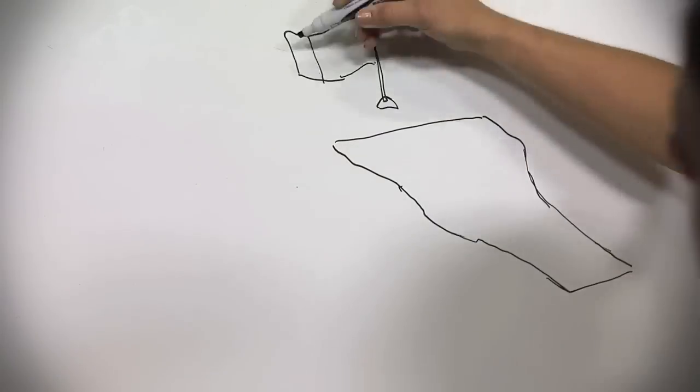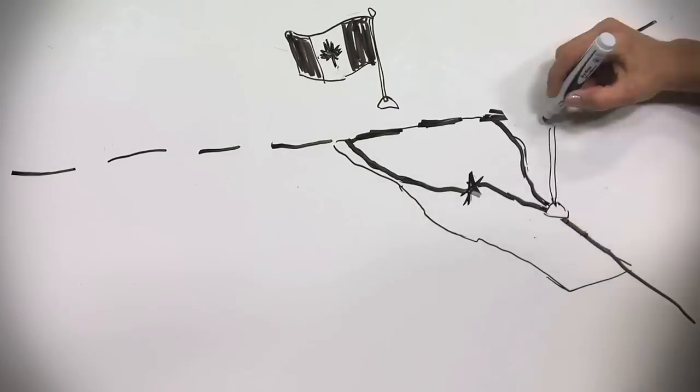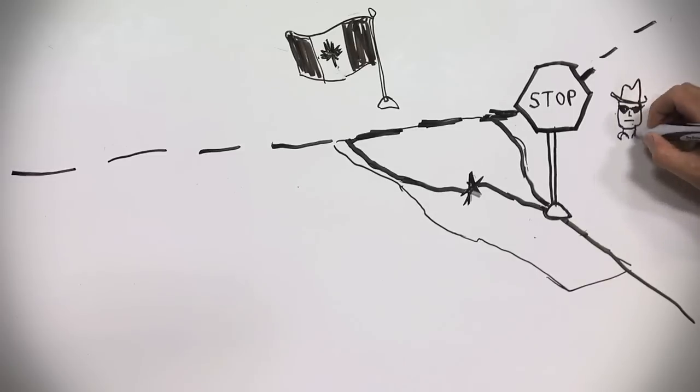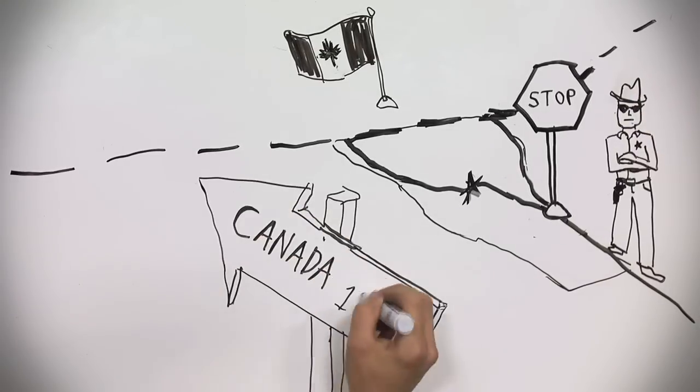The Border Patrol intermittently runs traffic stops on I-91 at White River Junction, nearly 100 miles from the Canadian border. Officers want to know who you are. Are you a U.S. citizen?